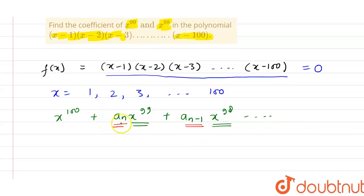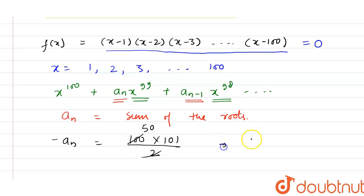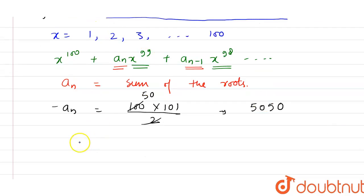Now let's find the coefficient of x raised to power 99. We can say that a_n is equal to the sum of the roots. So minus a_n is equal to 1 + 2 + 3 + ... + 100, which equals 100 into 101 upon 2, that is 5050. Therefore a_n is equal to minus 5050. This is the coefficient of x raised to power 99.